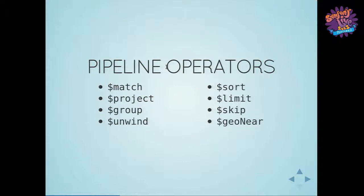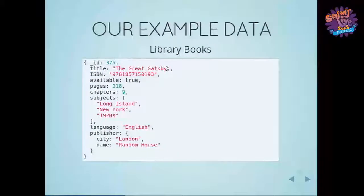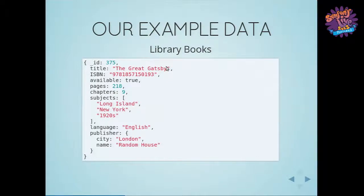The example data for the slides is library books — a bit contrived, but it has the basic schema features you might encounter in your own documents. We have an array of tag subjects, an embedded publisher object, some numeric fields and some string fields. I'm using numeric IDs to keep things simple — typically it would be a larger hashed object ID.